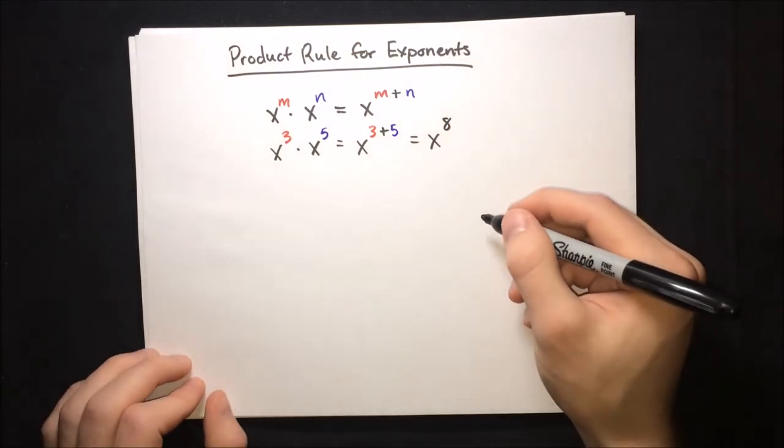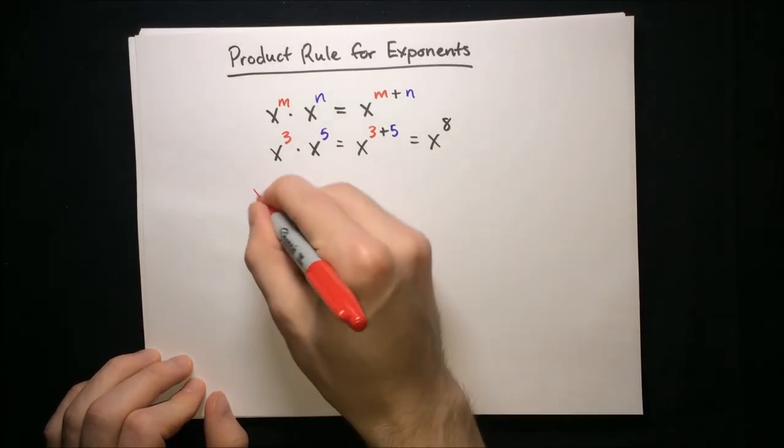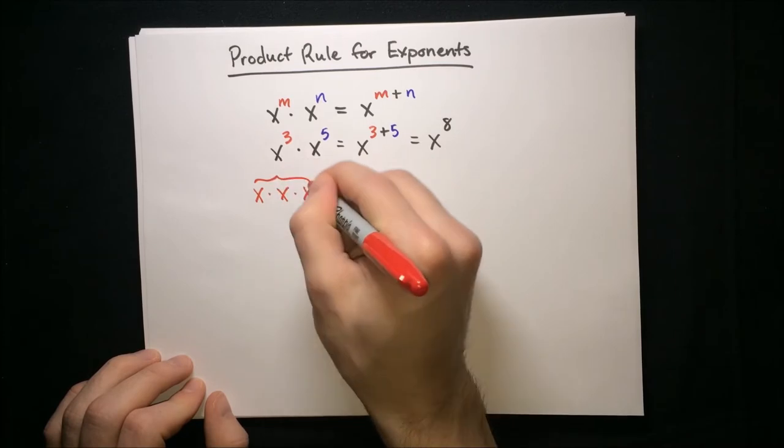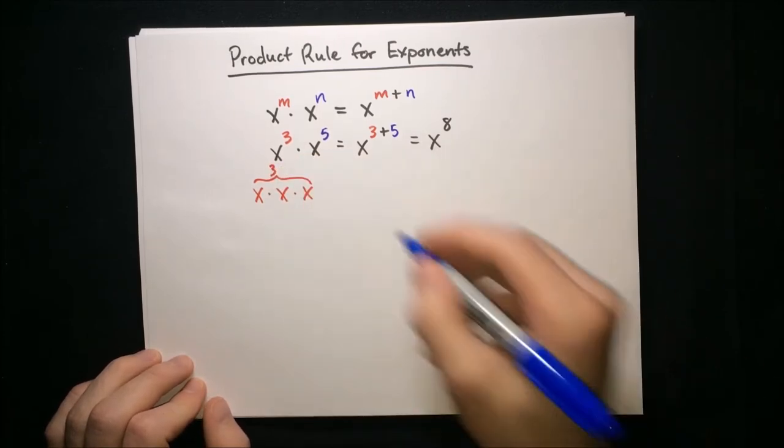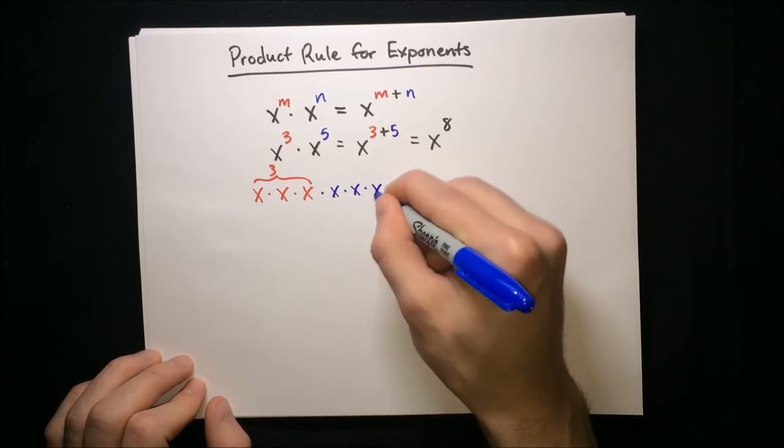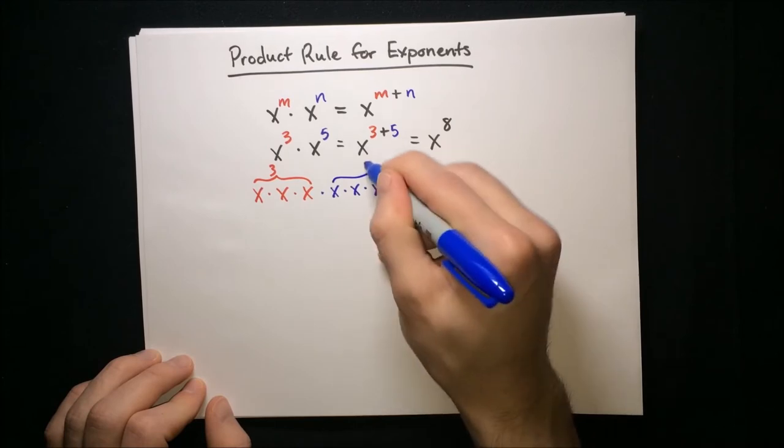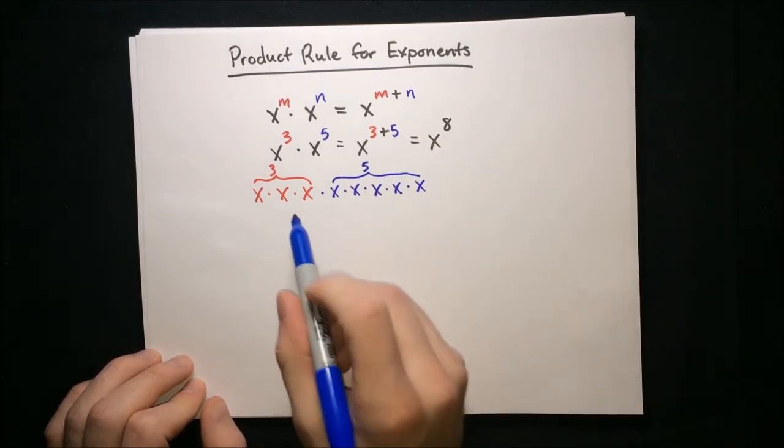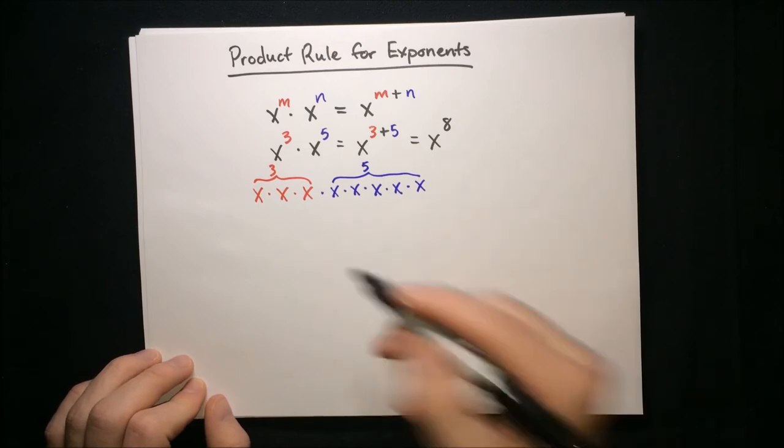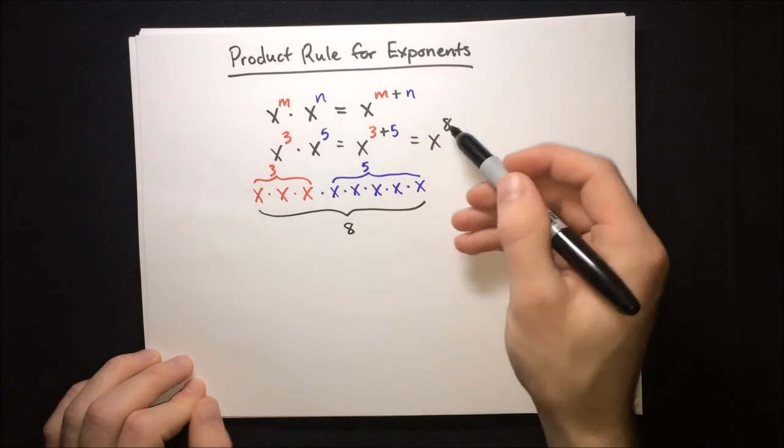Now the reason why this works is that x to the third, that's like three copies of x. One, two, three, so that's three copies. And then x to the fifth, that's like five copies, so times one, two, three, four, five. And then we just count how many copies in total are there. Well there's eight copies in total, so it's just x to the eighth.